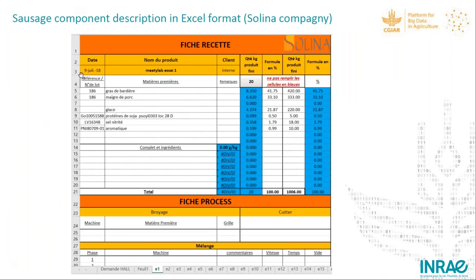Here we can see the description of ingredients provided by the company, in Excel format — showing ice, salt, pork trimming, and associated mass quantities in other columns. The company managed heterogeneous formats to manage their data.